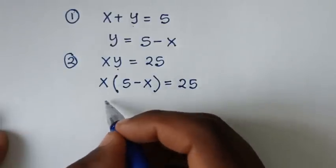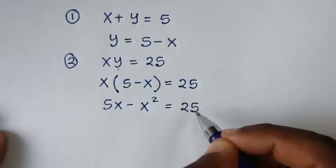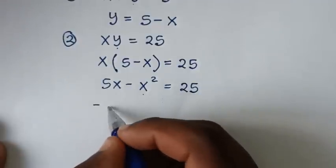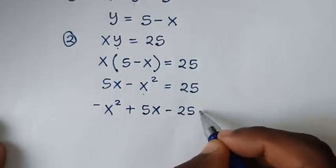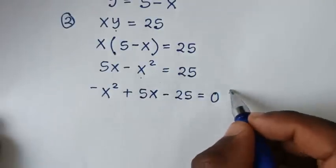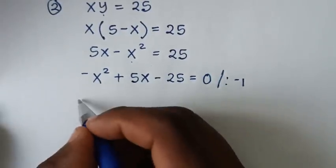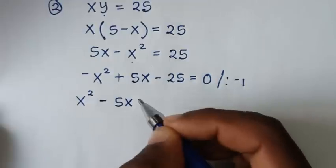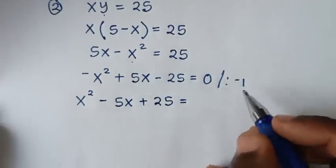Expanding: x times 5 is 5x, x times negative x is negative x squared, is equal to 25. Taking 25 to the left side: negative x squared plus 5x minus 25 is equal to 0. Then we make the negative x squared positive by dividing the whole equation by negative 1: positive x squared, negative 5x, positive 25 is equal to 0.